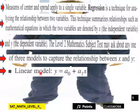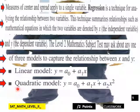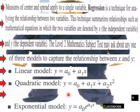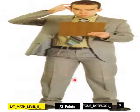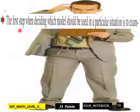So we have a linear model, which should be y equals a naught plus a1x. Then you have a quadratic model, which would equal a naught plus a1x plus a2x squared. Then an exponential model y equals a naught times b to the x.